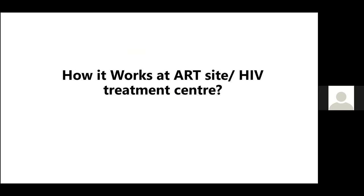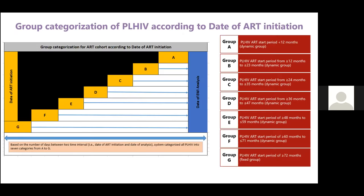At HIV treatment centers, patients are enrolled in treatment for different time periods — some recently enrolled, others on treatment for more than five years. We want to see their EWI indicators separately rather than lumping all patients together. For this purpose, we divided PLHIV into seven groups: Group A means on treatment for less than a year, whereas Group Z means on HIV treatment for at least six years. We calculate this using two time periods: date of ART initiation and date of EWI analysis.